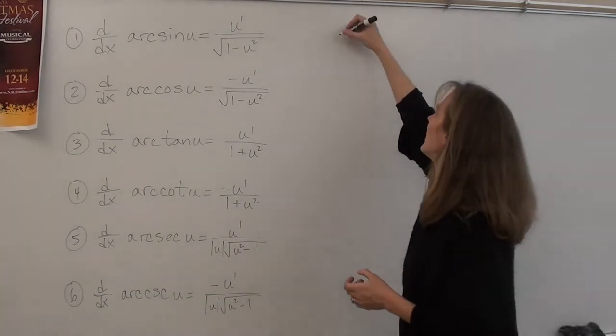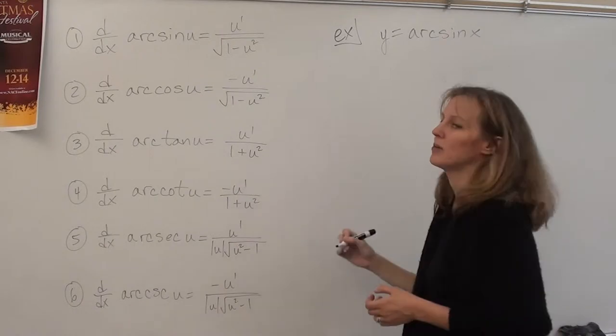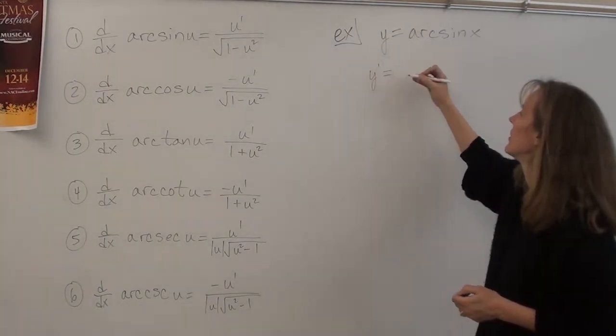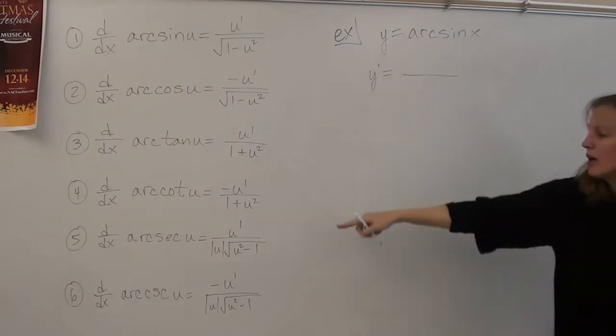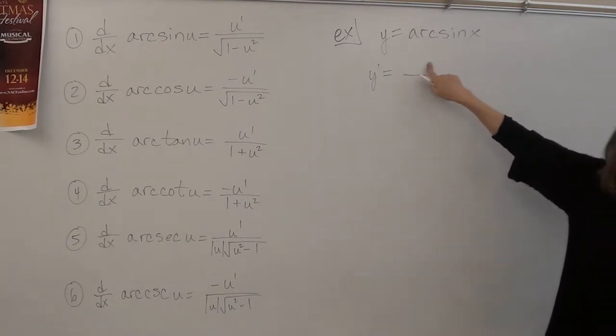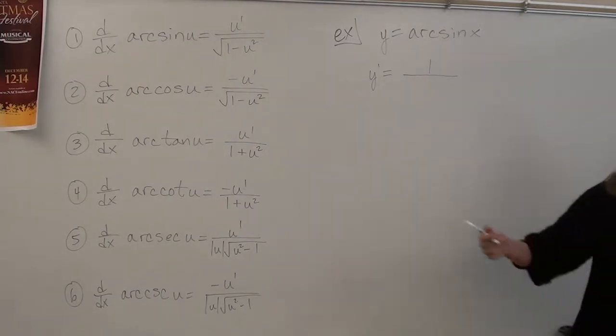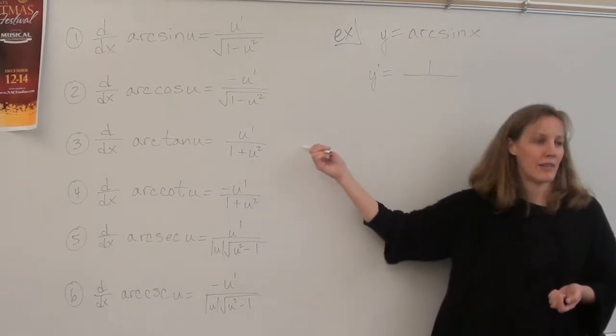However, I am going to show you both ways so that whichever way you prefer, you can use. There's nothing wrong with deriving them from scratch every time. Okay, so we're going to start with the easiest of all of them, which is y equals arc sine x. Now, if y is arc sine x, and we need to do the derivative, your u is x, right? The argument is x. The derivative of the argument for all six of these, the derivative of the argument goes on top. What is the derivative of x? One. It's not x prime. It's one, right? And then on the bottom, you've got three possibilities. Arc sine and arc secant both have roots. The s's both have roots. Arc tan does not have a root.